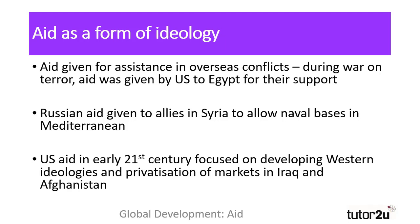Aid is often used to coerce nations into providing their assistance in global conflicts. Most notably, during the war on terror in the early part of the 21st century, Egypt was one of many nations awarded aid for their support of the US. Russia too has given aid to Syria in return for allowing Russian naval bases in the Mediterranean, which has also assured Russian support for the Syrian government during the ongoing conflict in the region.